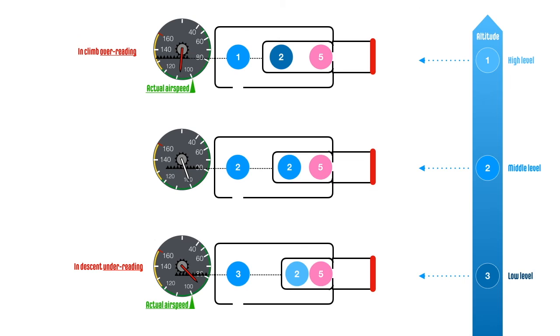The airspeed is incorrectly displayed to be lower when the aircraft descends, since the diaphragm further collapses as the static pressure inside the case increases.